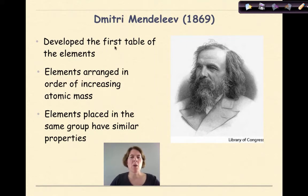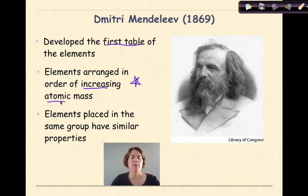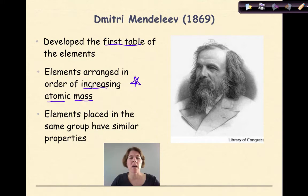We acknowledge him with the development of the first table of elements. The important thing to realize with the work of Mendeleev is that he organized the elements based on increasing atomic mass. So the first periodic table — if you were to look at Mendeleev's periodic table and look at the arrangement of the elements — they would all be by atomic mass. This is before anybody knew about the idea of an isotope.